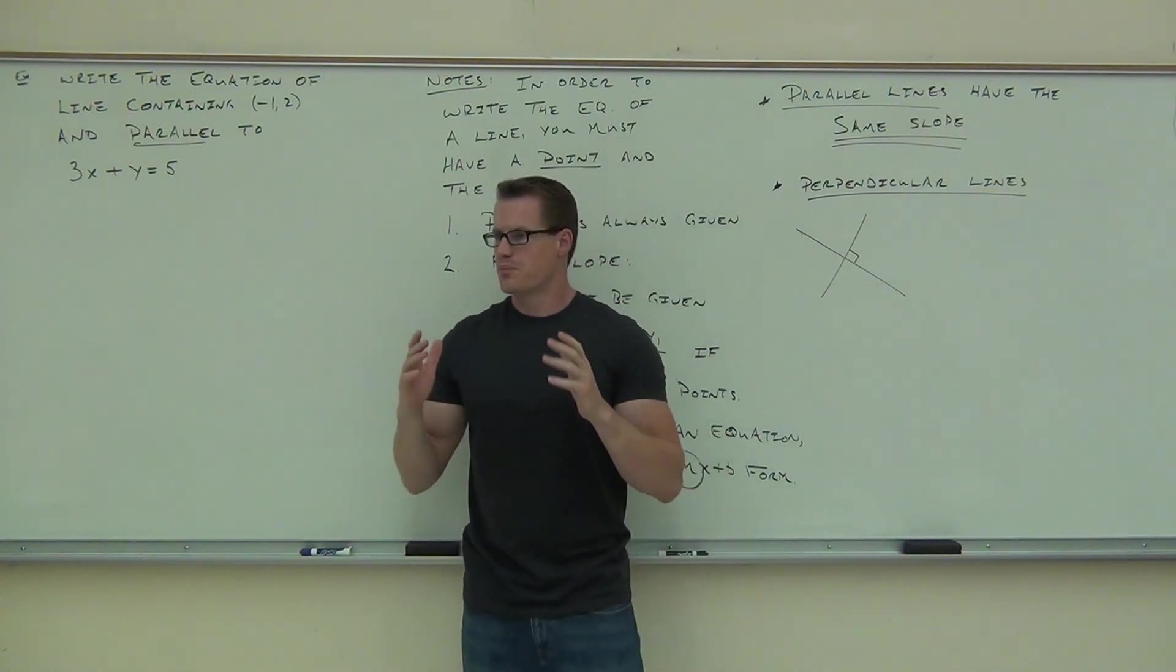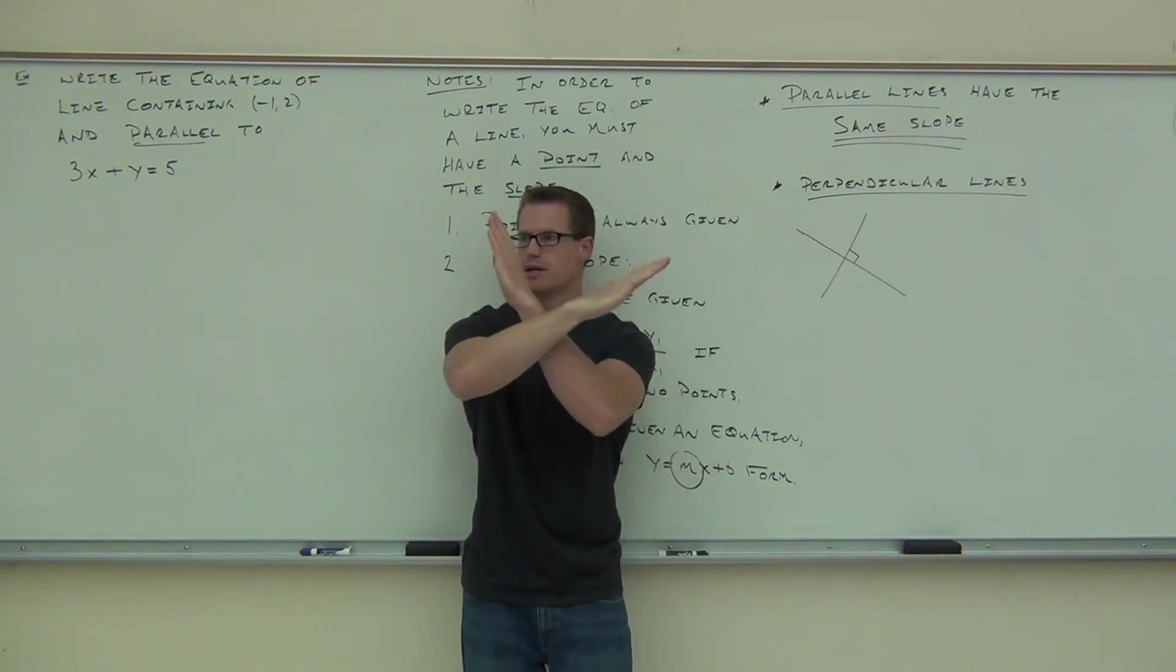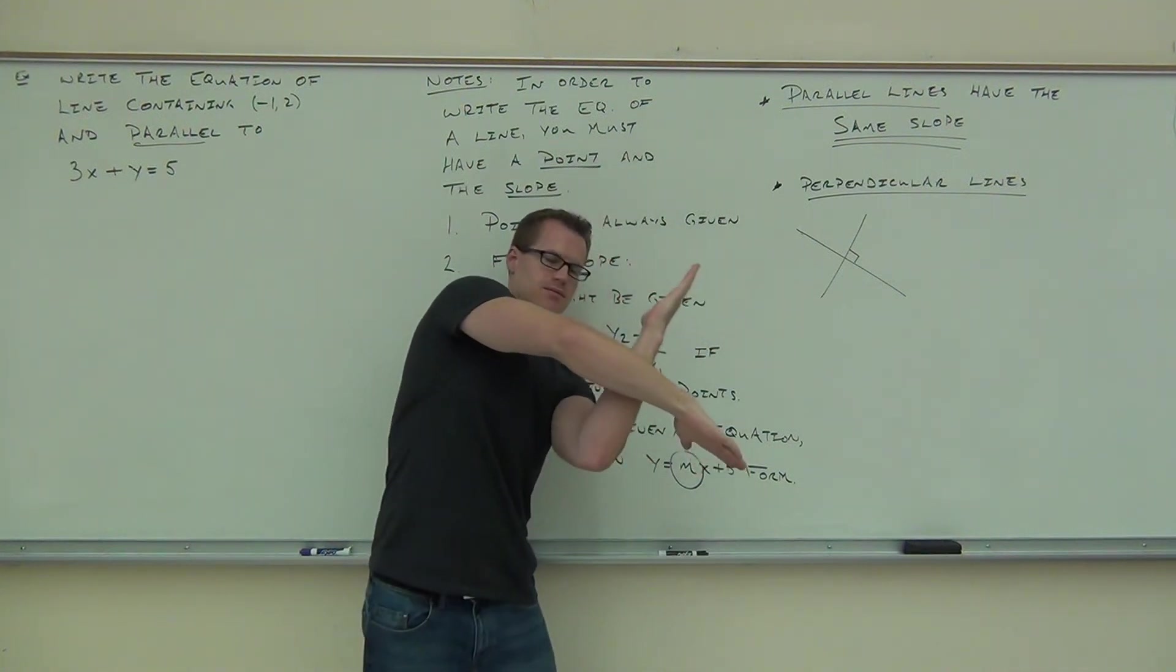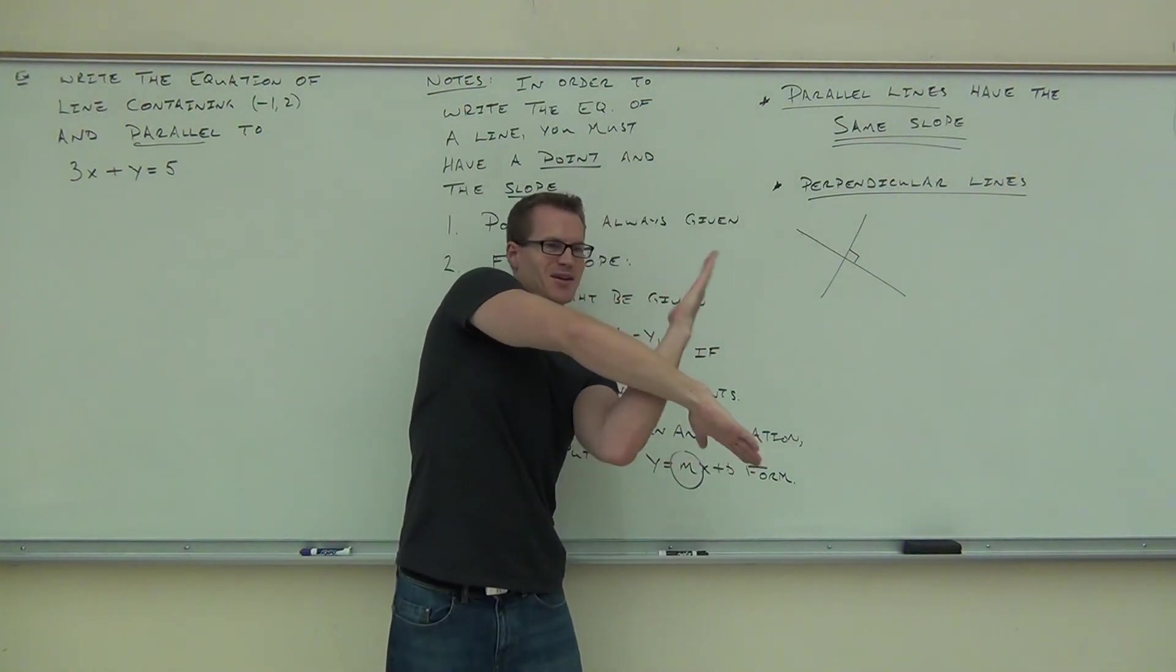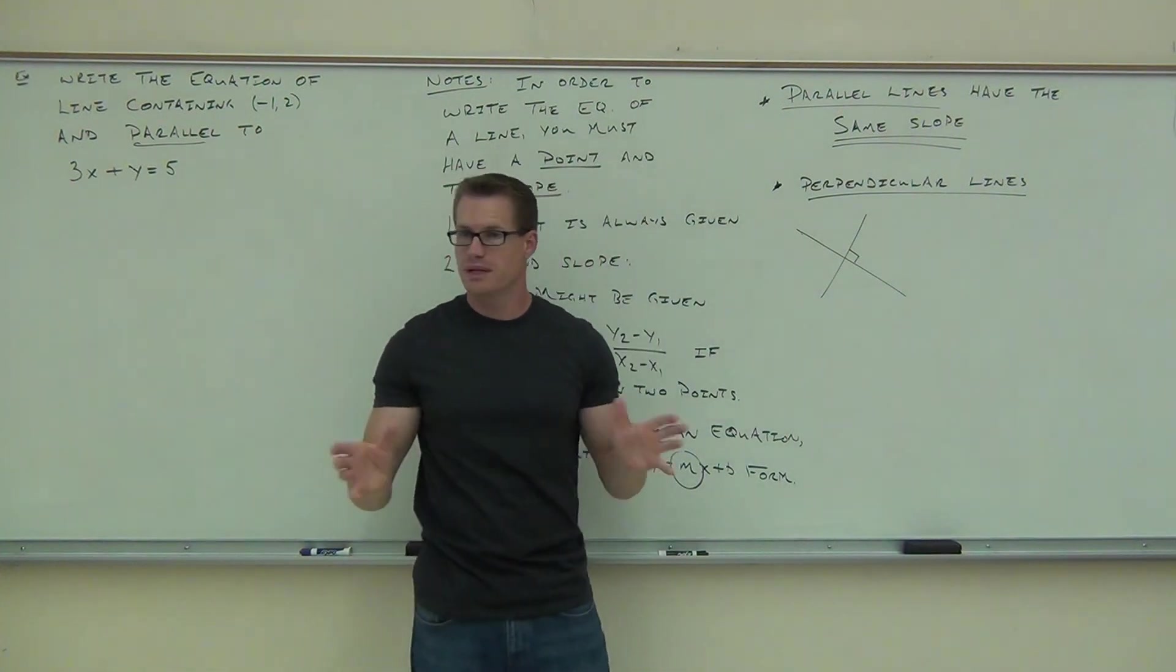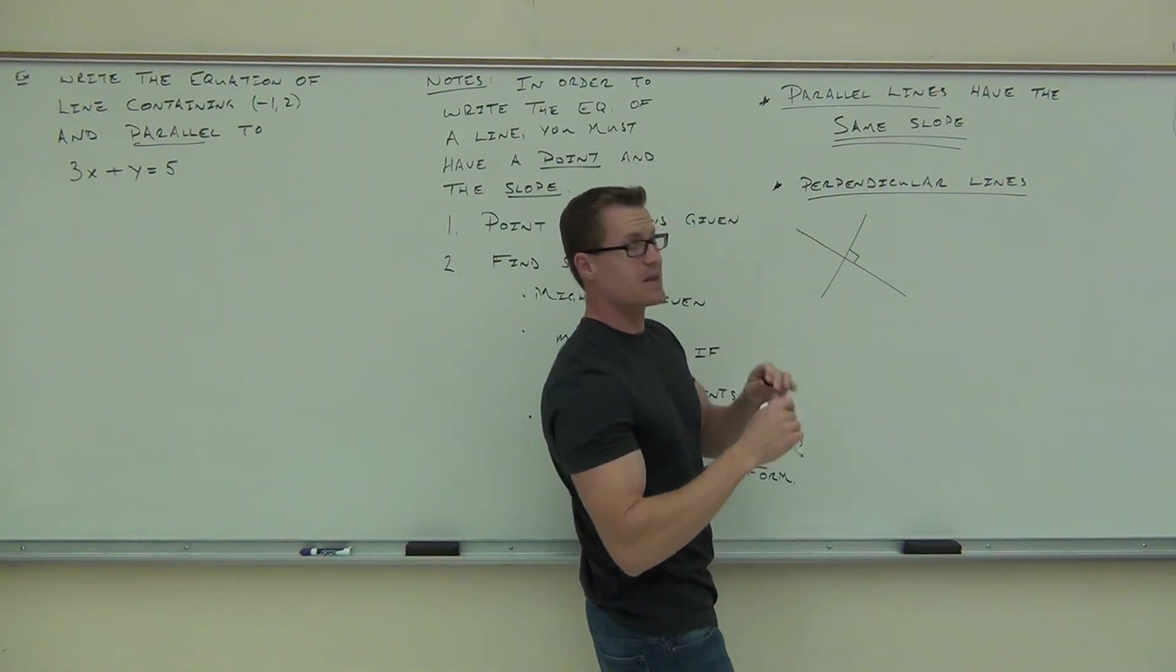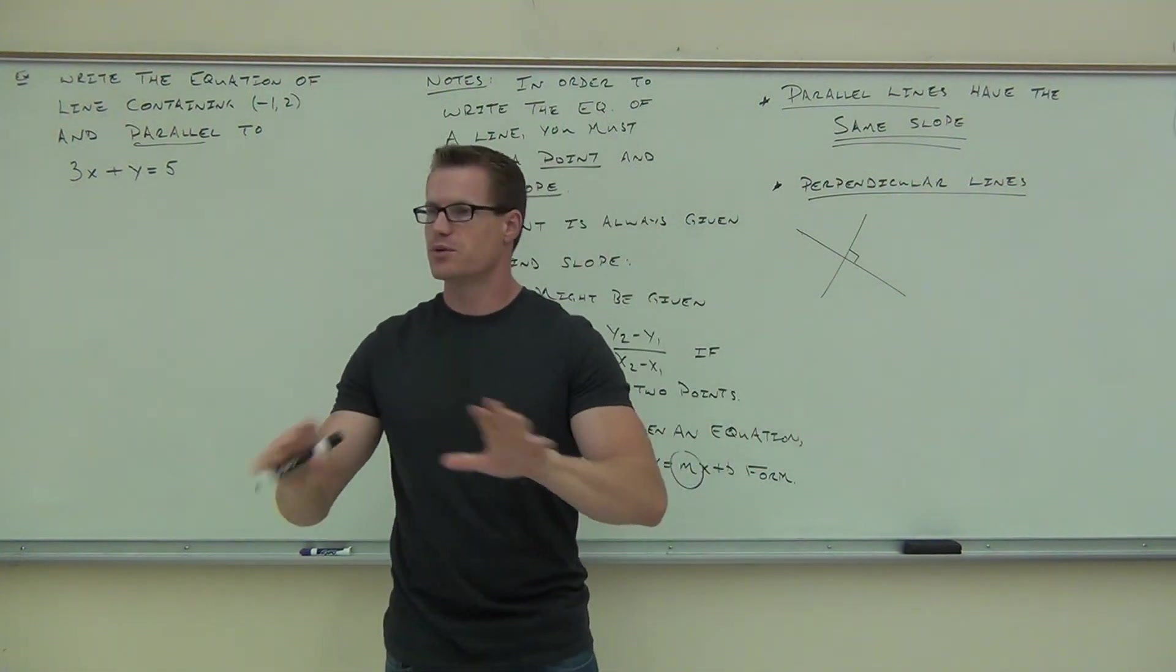If you have perpendicular lines, though, if one's going up like this, the other one has to be going down to meet at 90 degrees. If one's going down, the other has to be going up. So one will be positive, one will be negative. That has to happen. Perpendicular lines have slopes which are negative reciprocals.